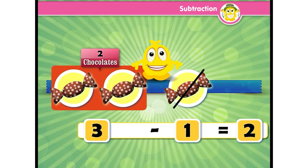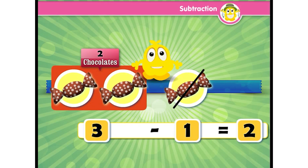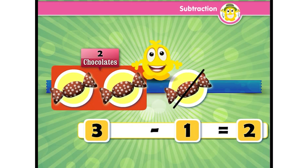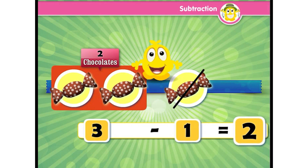Subtraction means to lose, to take it off. When you subtract, you get a smaller number than the numbers being subtracted. Subtraction can be done in a lot of ways, but unlike addition, we cannot reverse the order. The greater digit comes first always, and then the lesser, to find out the difference.